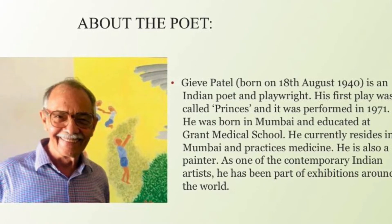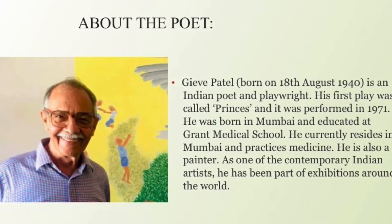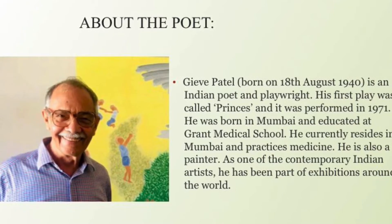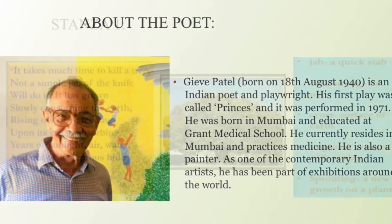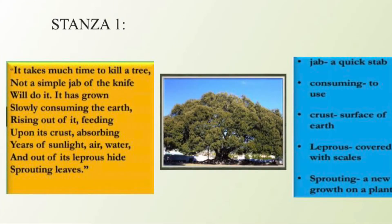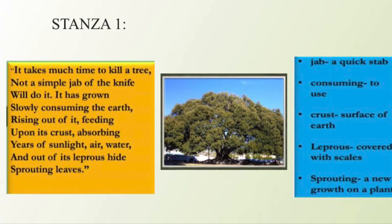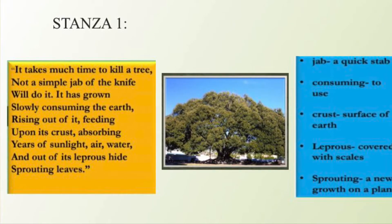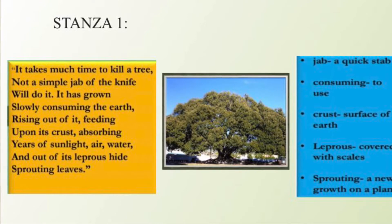Now let me explain the poem stanza-wise. In the first stanza, you get to see difficult words like jab, consuming, crust, leprous, and sprouting.